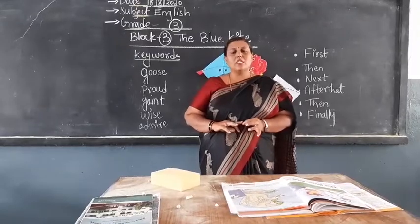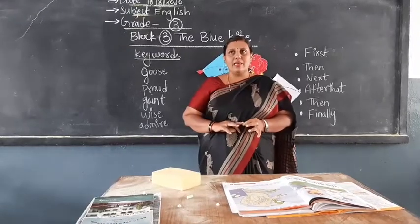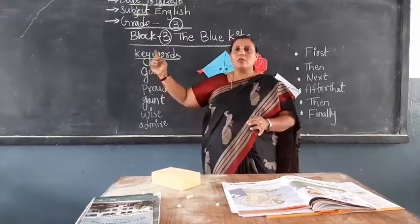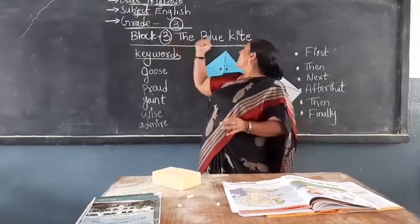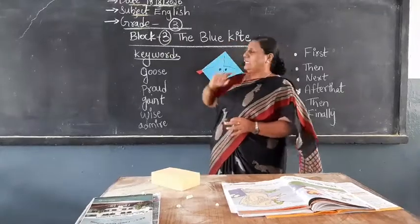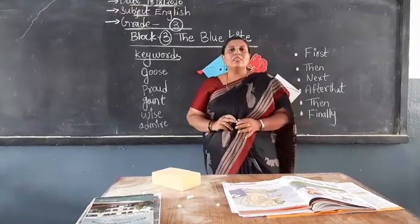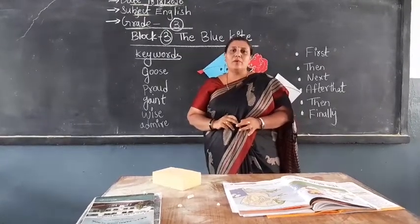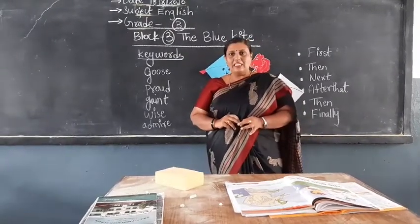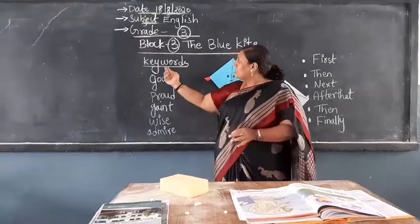Now an interesting story is coming in block 3. Look here — the blue kite. What is the name of the story? Block 3: The Blue Kite.